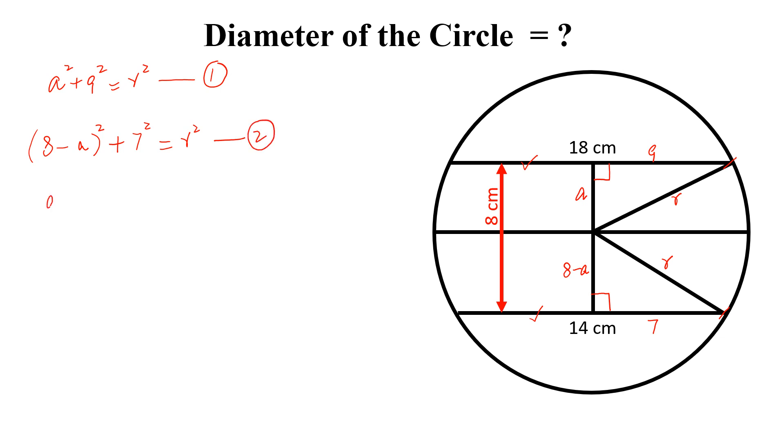From these two equations, we can write a square plus 9 square equal to 8 minus a whole square plus 7 square. Here, simplify this: a square plus 81 equal to 64 minus 16a plus a square plus 49. If we simplify this, we will get 16a equal to 32 and from here we get a equal to 2.